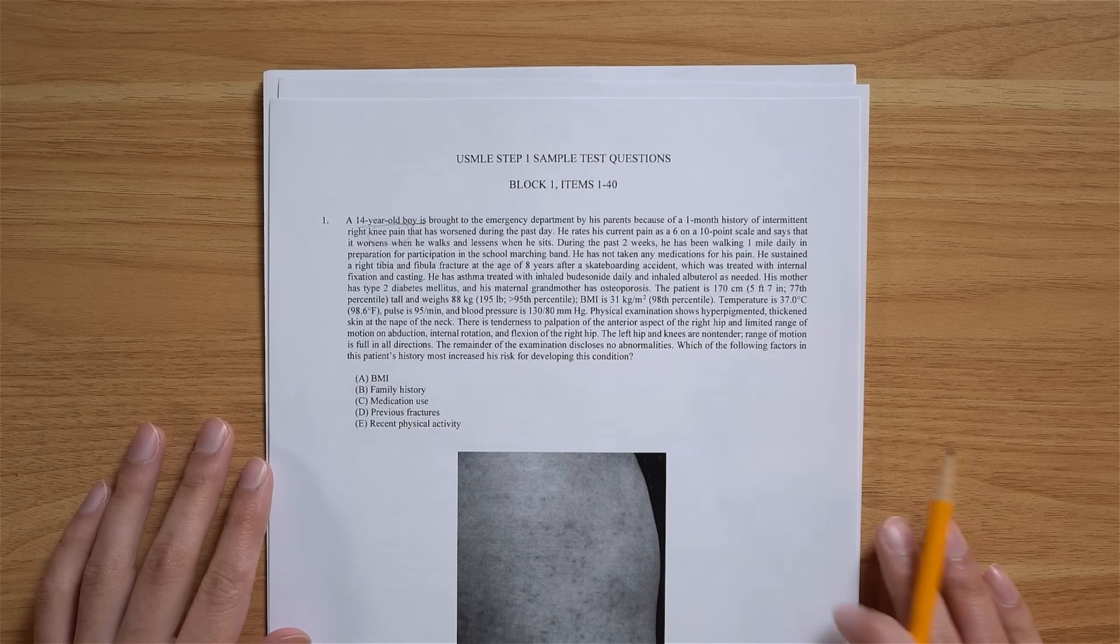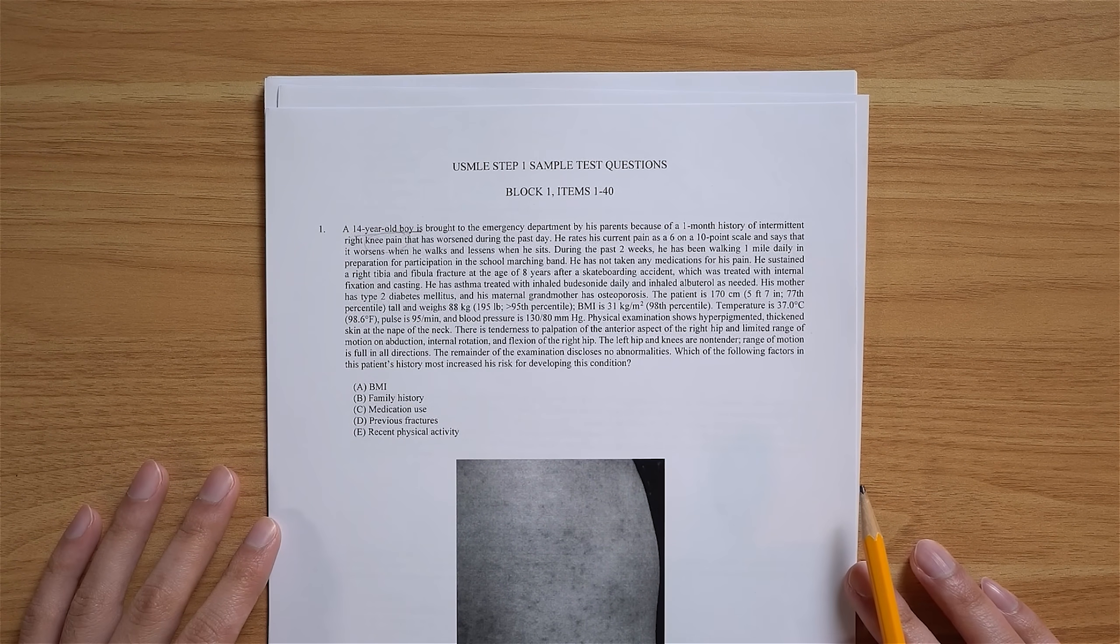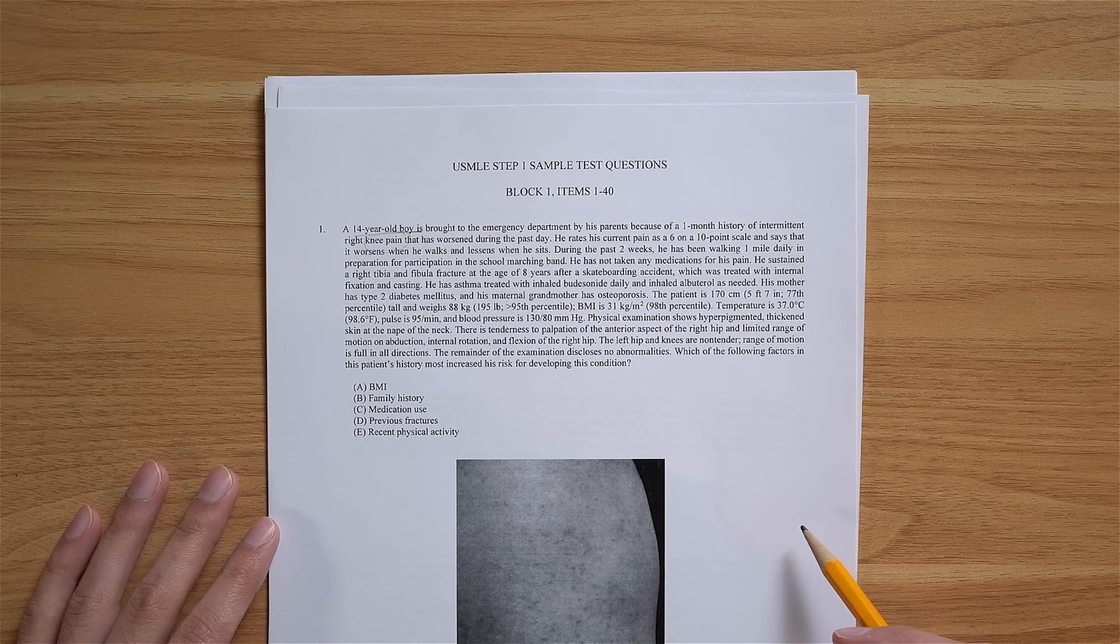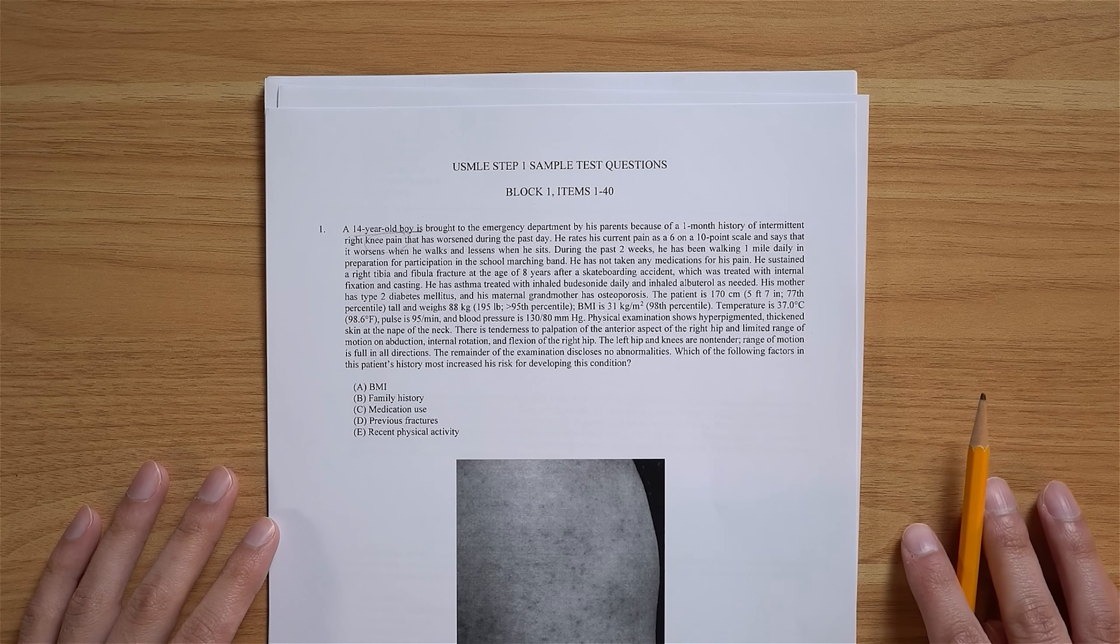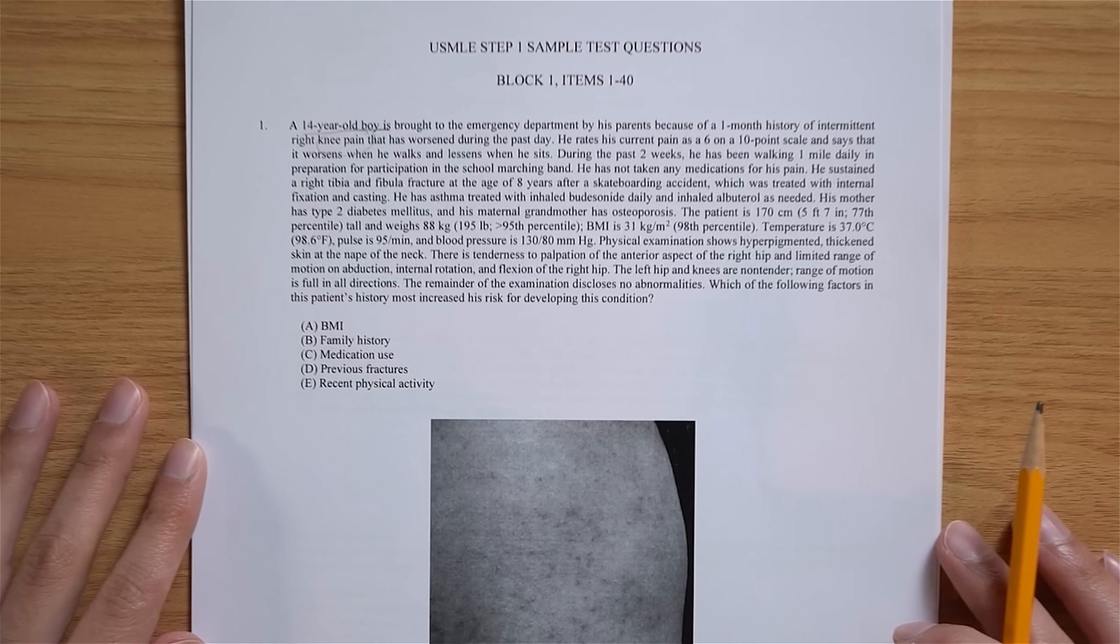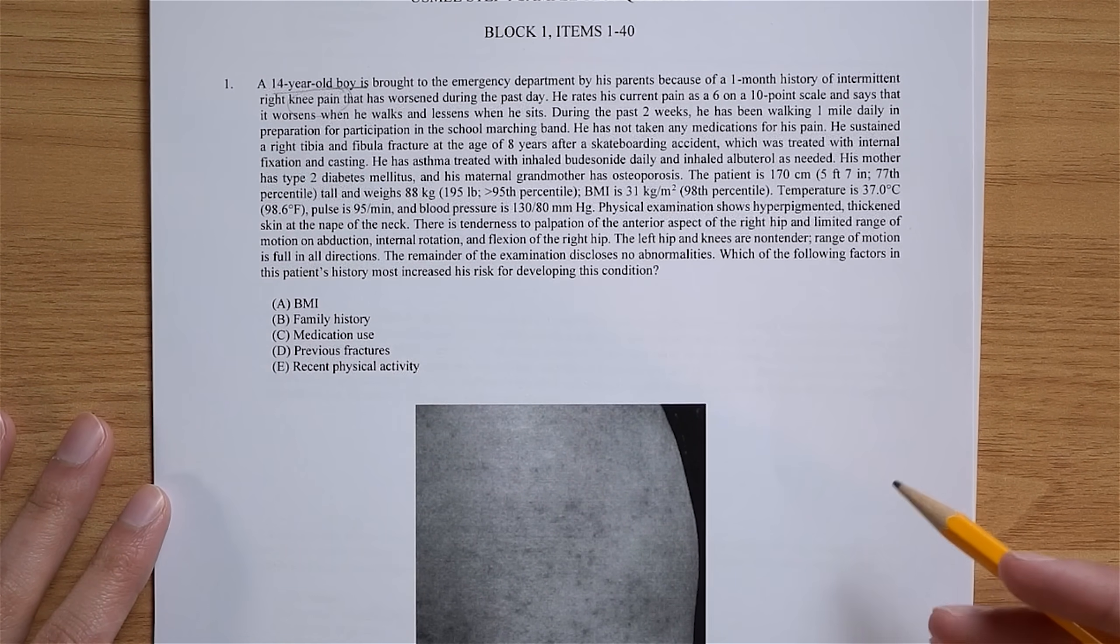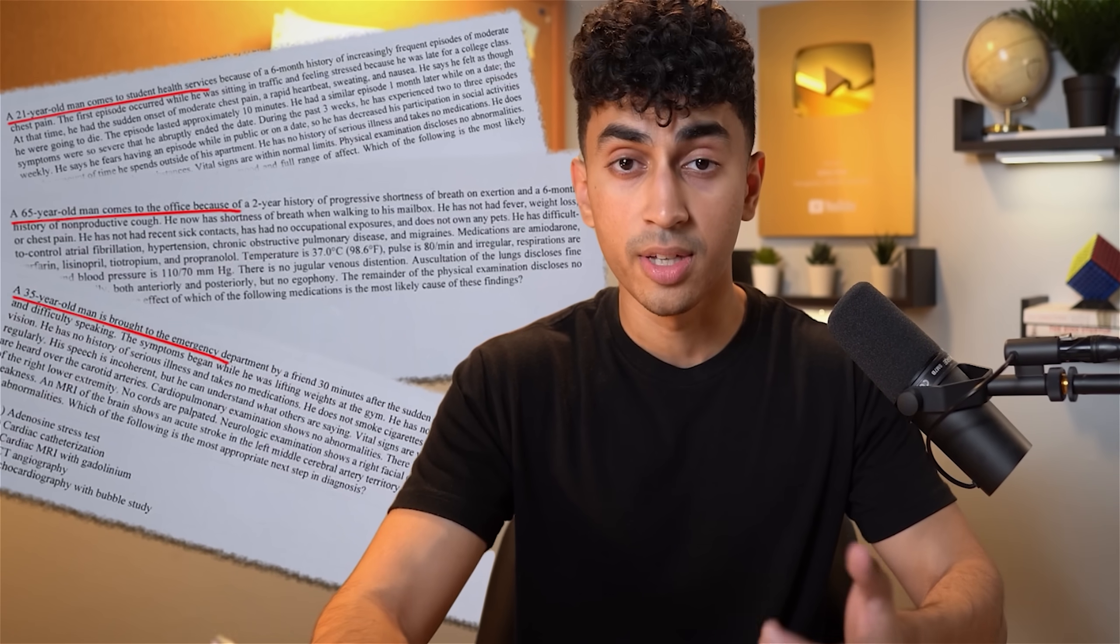So this question right here asks you about a 14-year-old boy who is experiencing knee pain. It gives you a lot of information about the patient, and then it asks which of the following factors in this patient's history most increased his risk for developing this condition. Is it his BMI, family history, medication use, previous fractures, or recent physical activity? And you'll very quickly notice that every single question has a very similar structure.